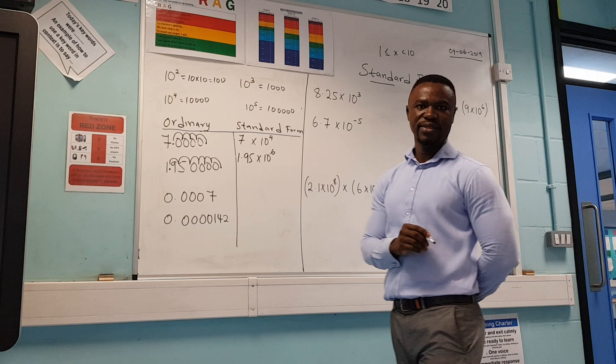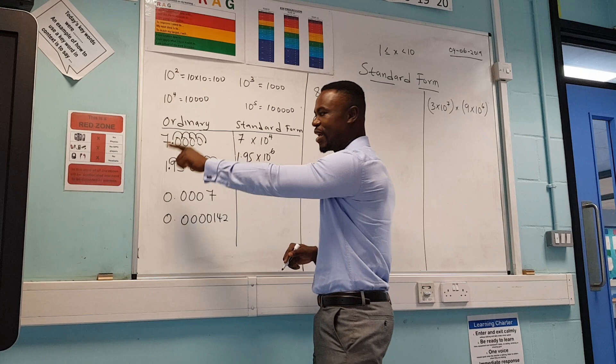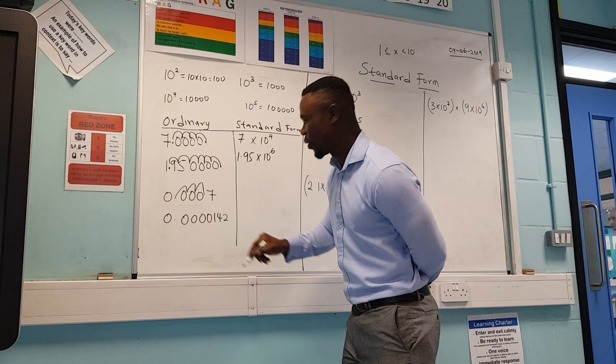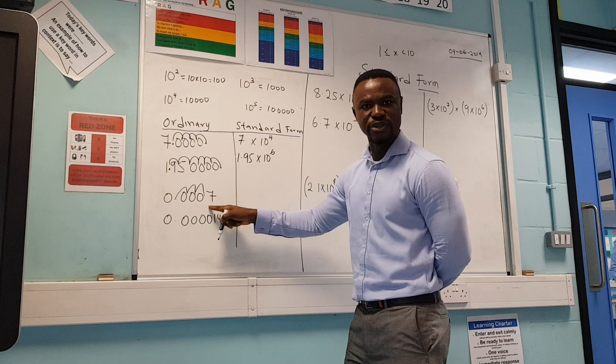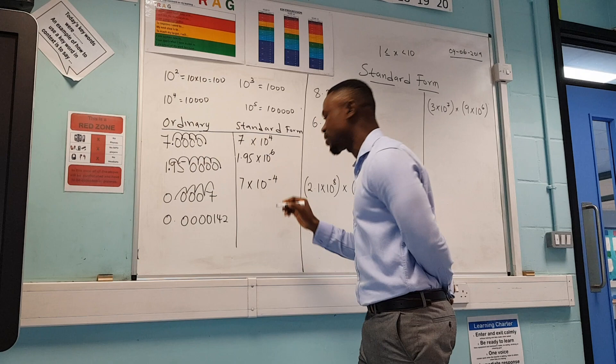Now let's look at small numbers starting with zeros. This time we move the decimal point to the right side. Remember: when you move to the left, the powers are positive; when you move to the right, the powers go negative. In this case I move one, two, three — but I can't stop there because it still begins with zero, so I move again to four places. That gives 7 times 10 to the power of minus 4.